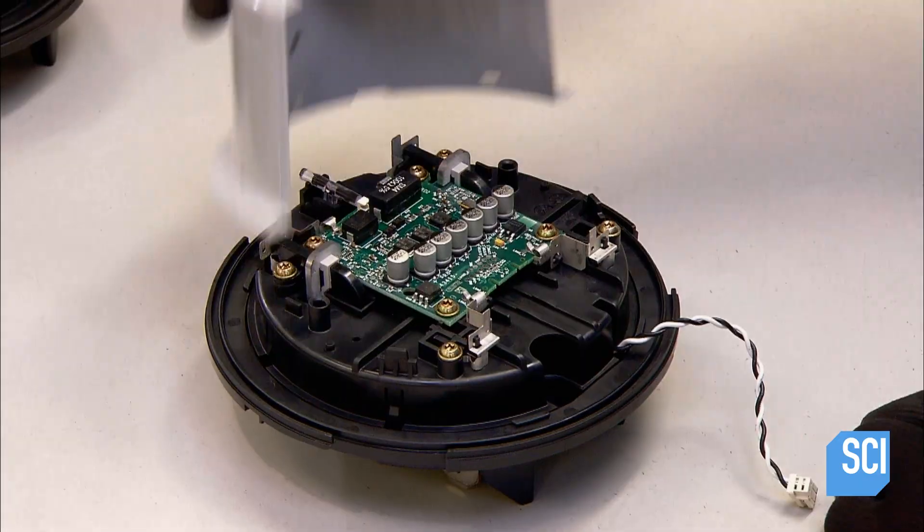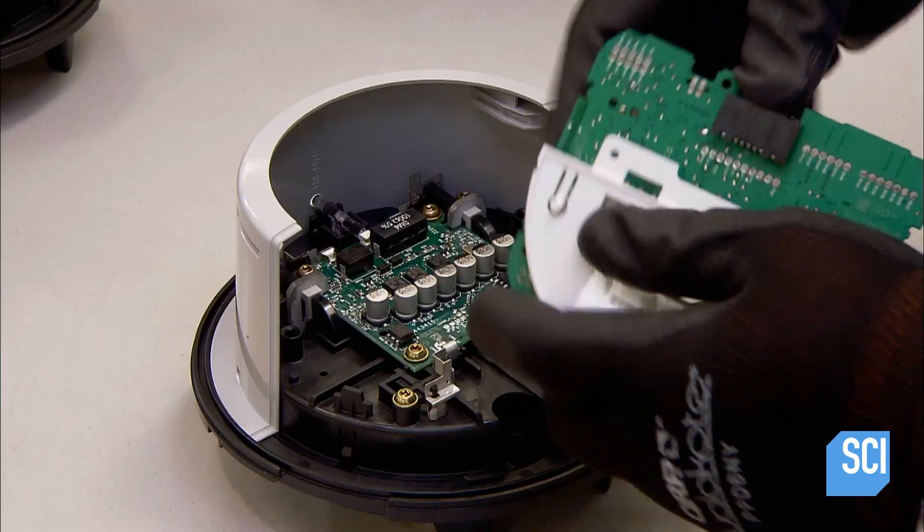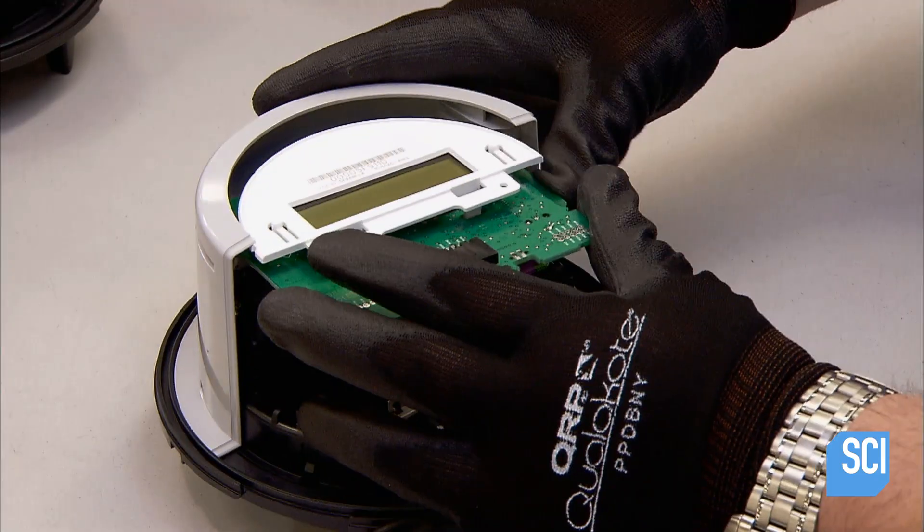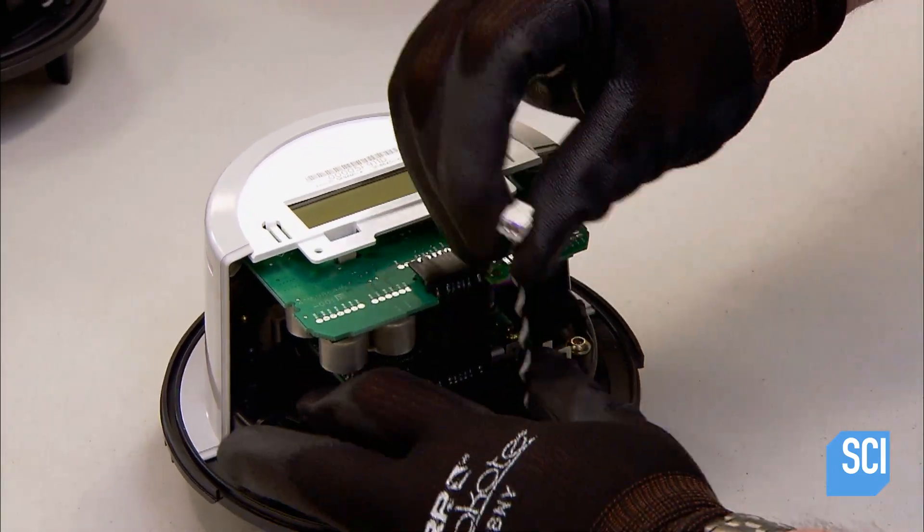The unit comes off the automated line and a worker completes the assembly. He attaches a connector to the digital display circuit board, installs the display, then connects the switch wire to the display's board.